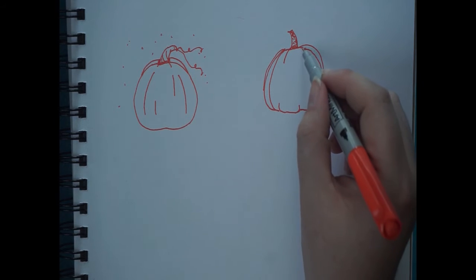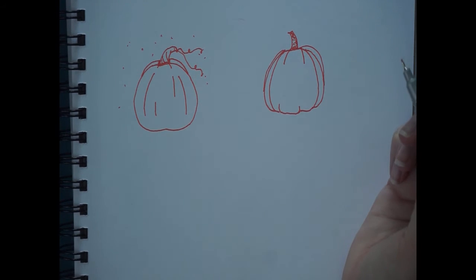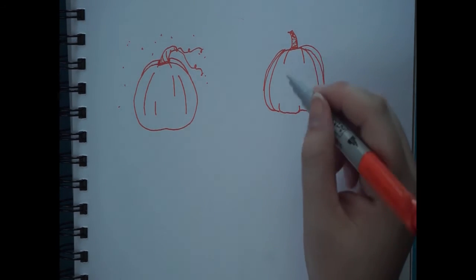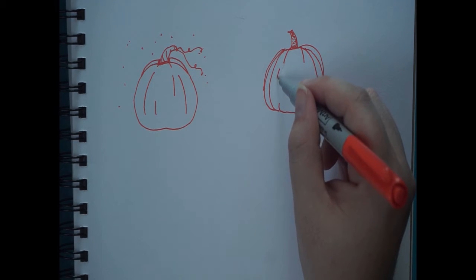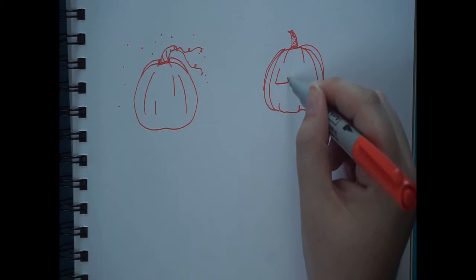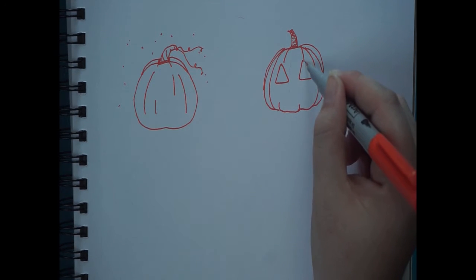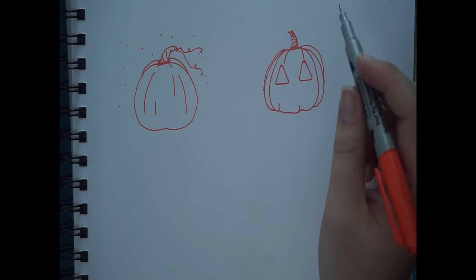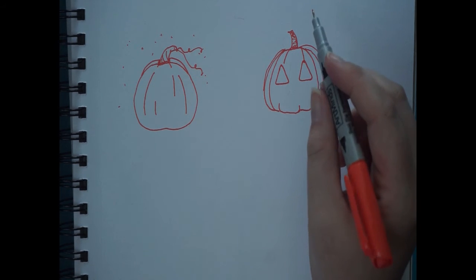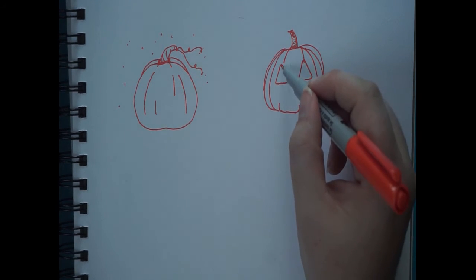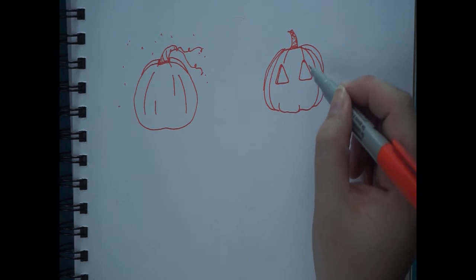This pumpkin is going to be a jack-o-lantern so I don't want to draw the lines all the way through for the curves because I want room for the eyes. And depending on how you wanted the jack-o-lantern to look, you could make the eyes black for the most part.